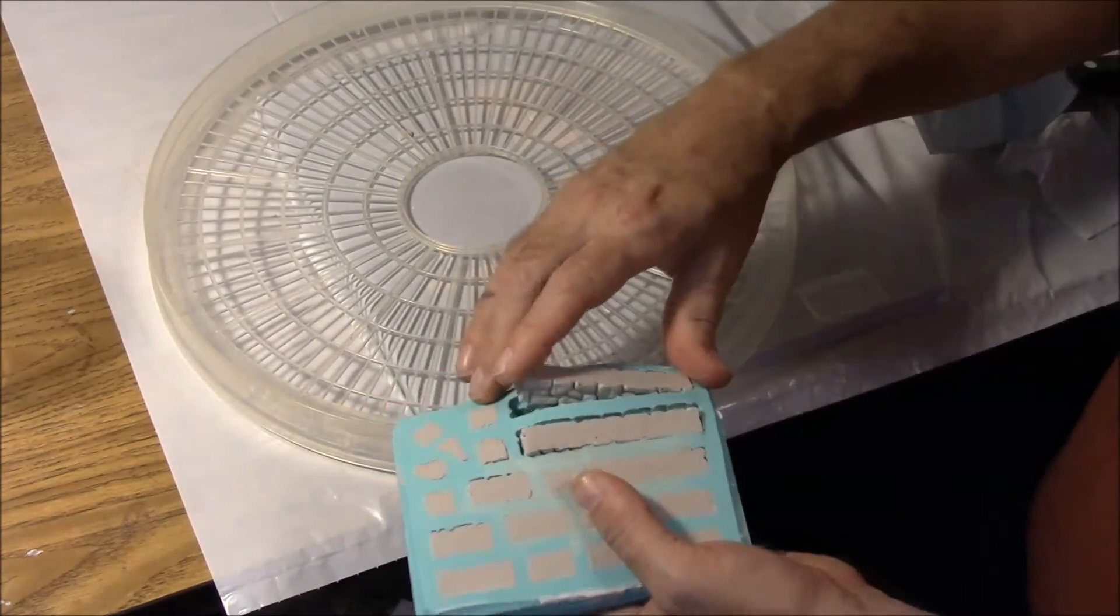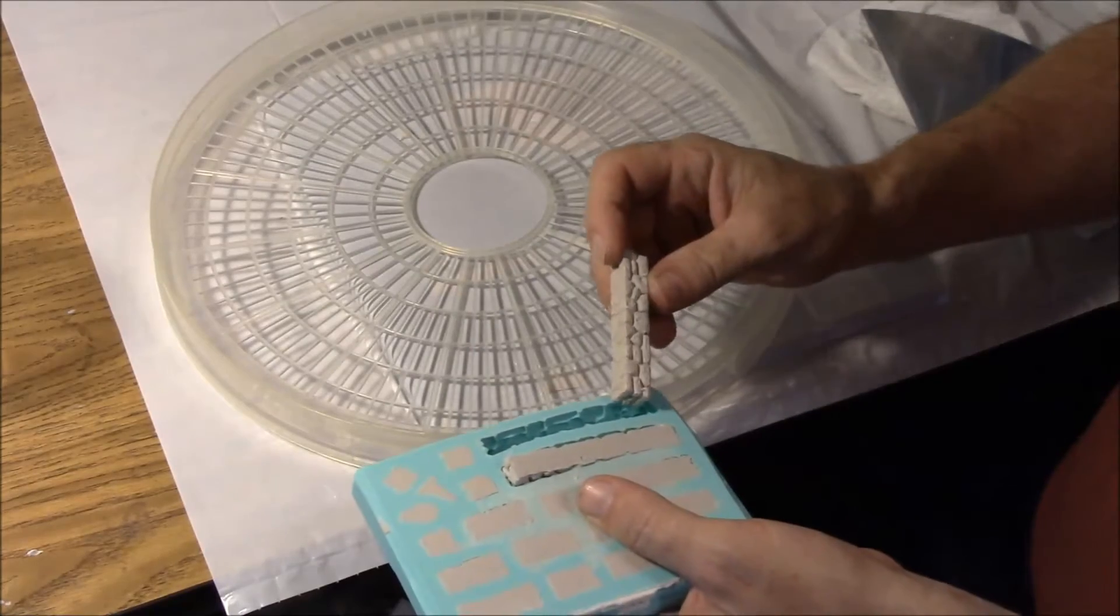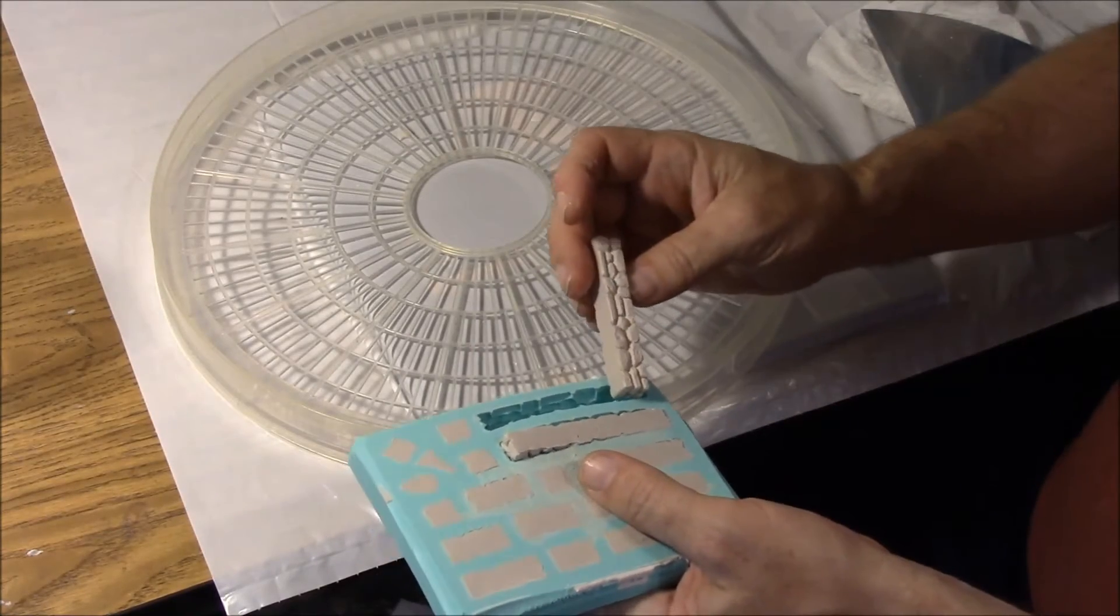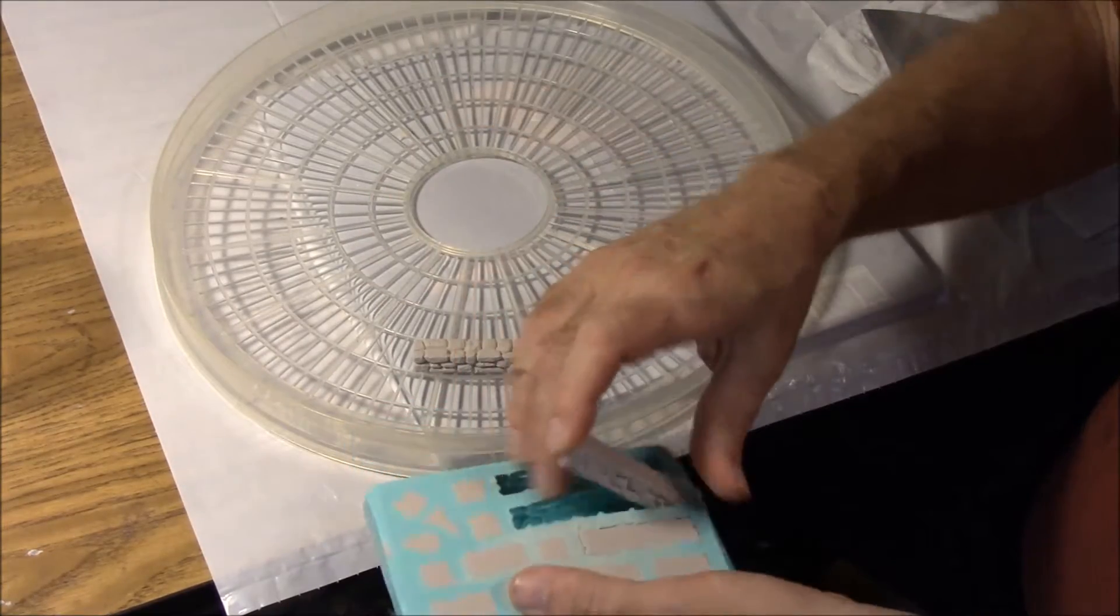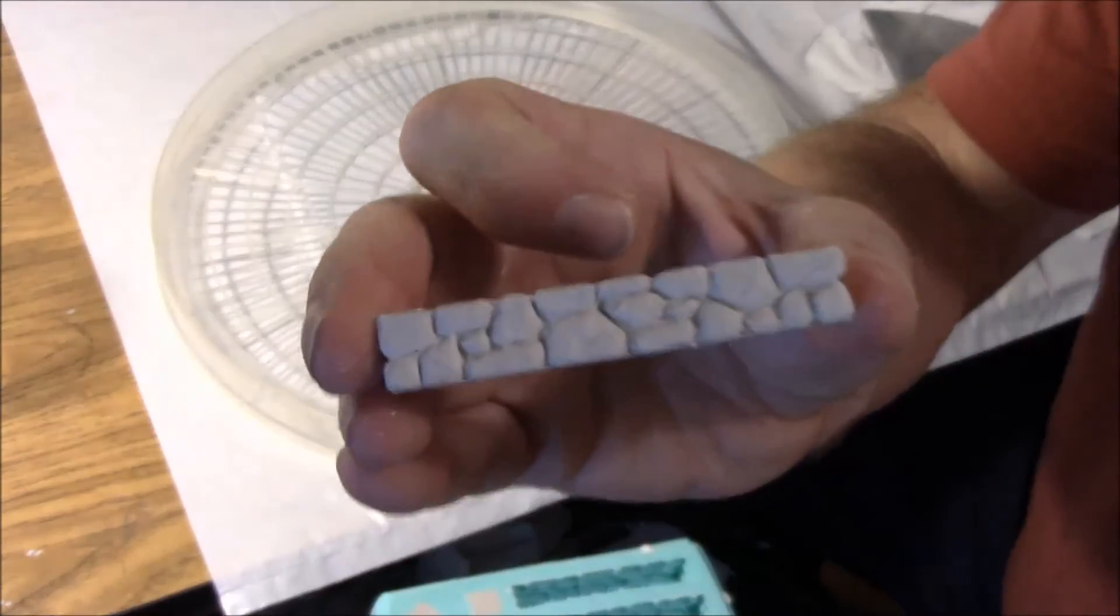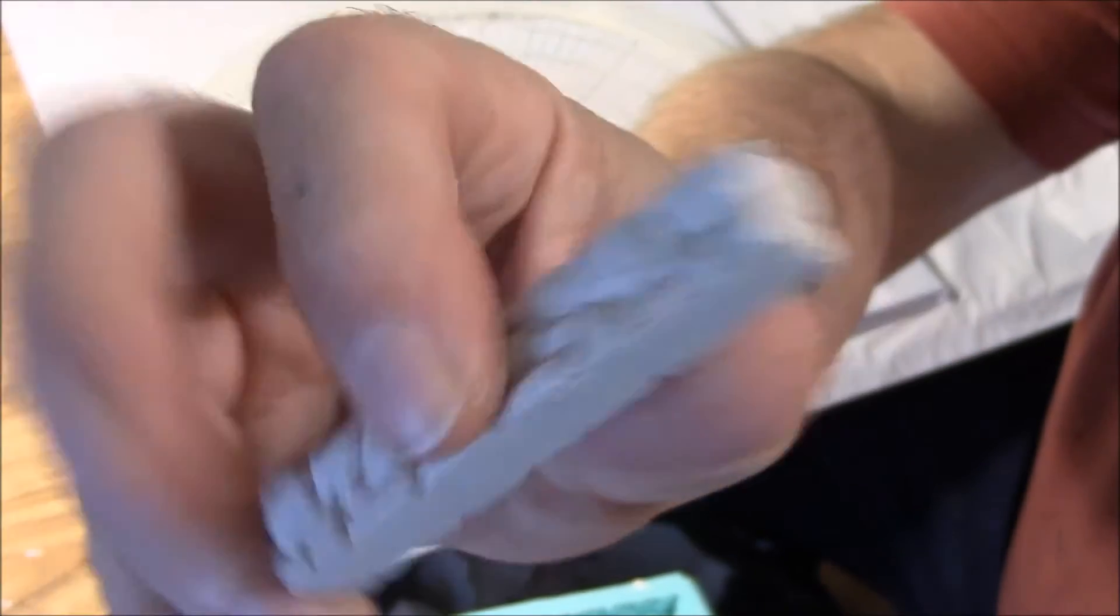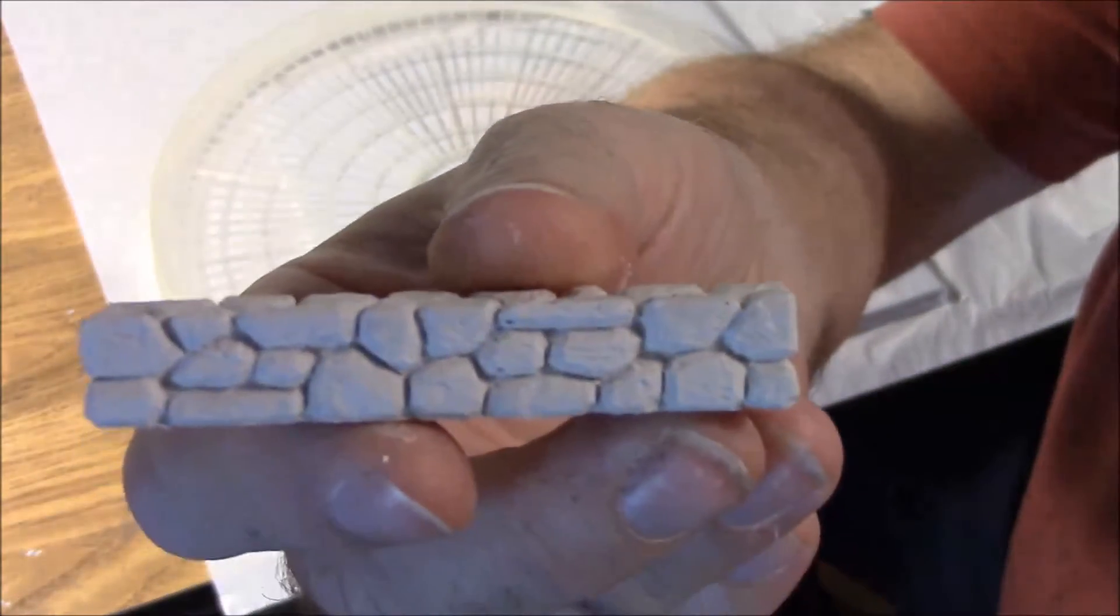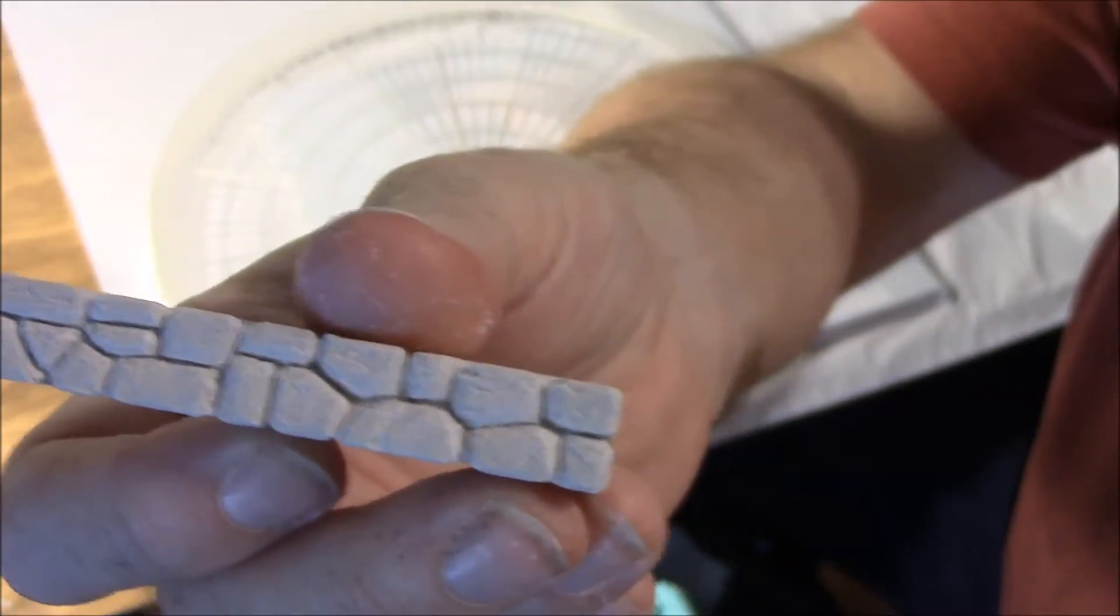So what we're going to do is demold the blocks and let's see how we did here. It looks like they did pretty good. We do have a few bubbles but let me see if I can get up close here. That's how these blocks look on both sides. It looks like we didn't really get very many air bubbles.